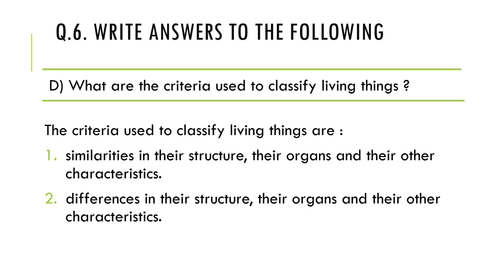The next question is: what are the criteria used to classify living things? The criteria used to classify living things are: first, similarities in their structure, organs, and other characteristics; and second, differences in their structure, organs, and other characteristics.